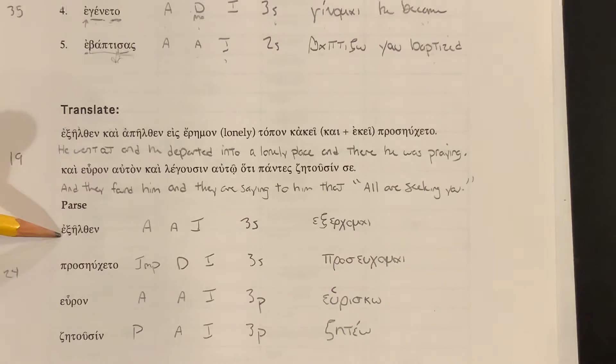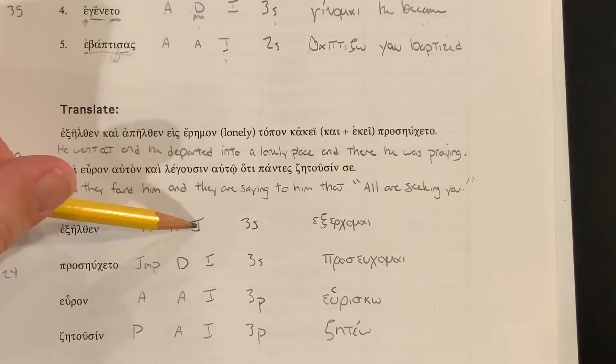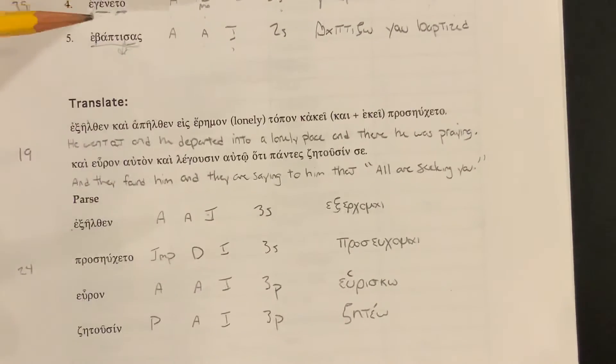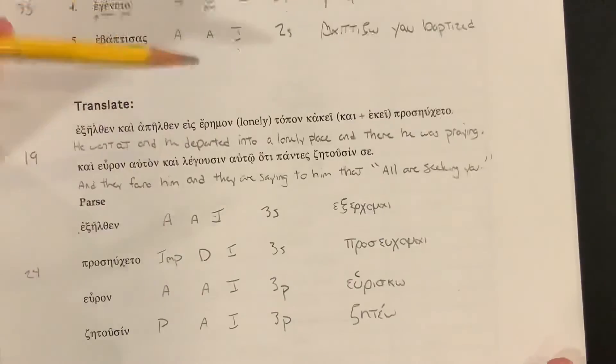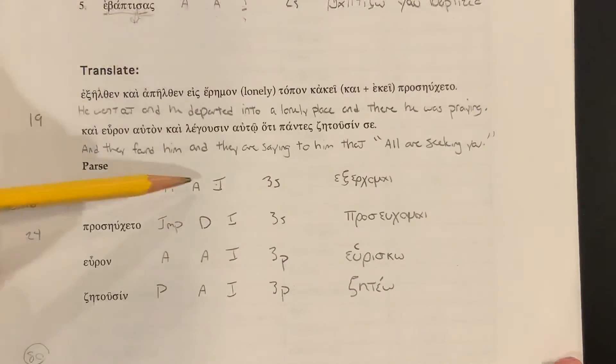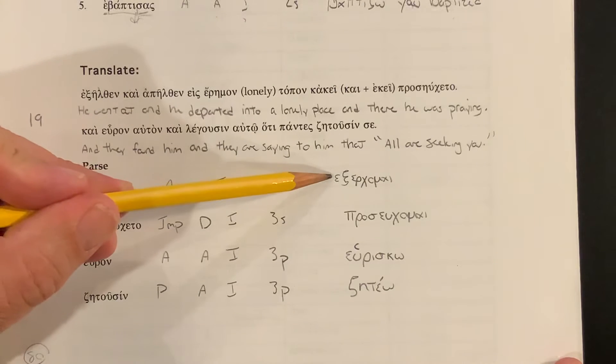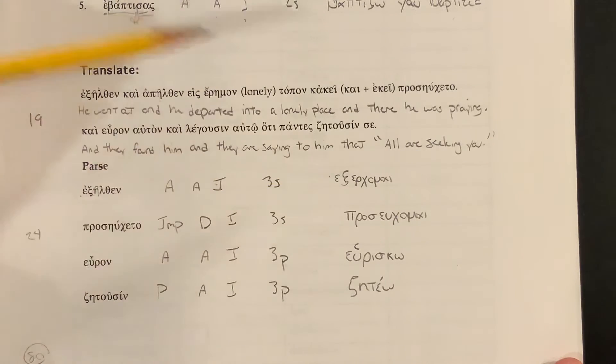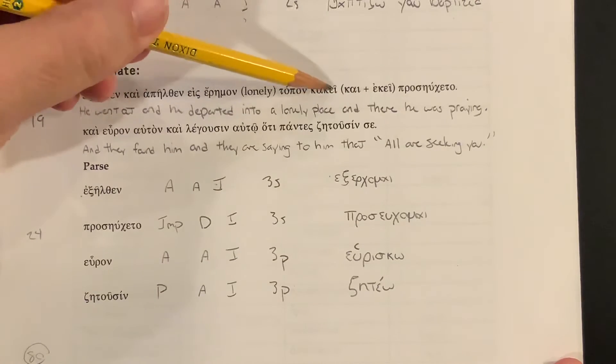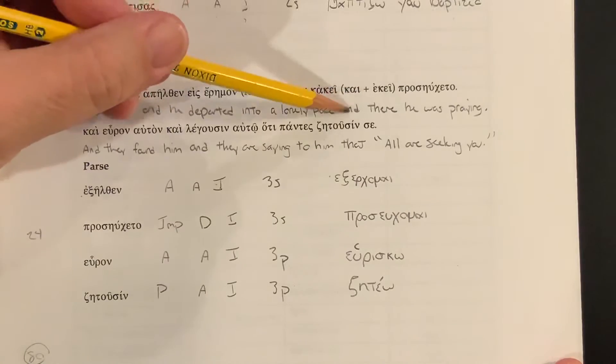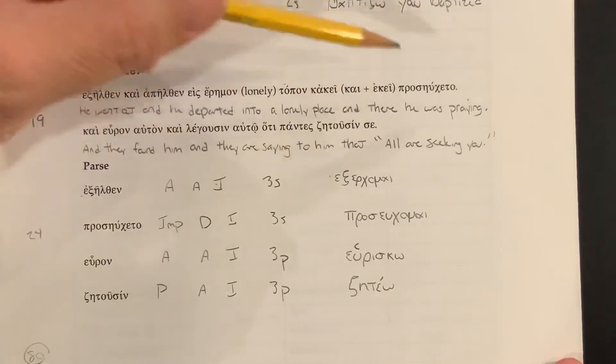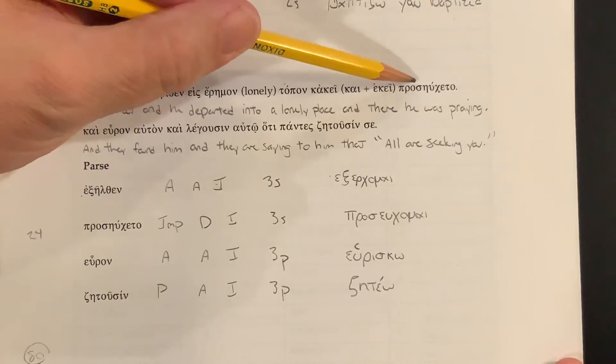So exelthen is an Aorist active indicative, third singular from exelthen. From ex-erchomai. So he went out and departed into a lonely, tapon, a lonely place. And kakei is kai ekei. And there, or in that place, there in that place.